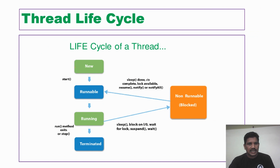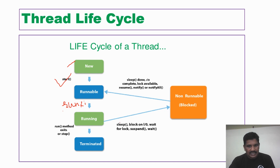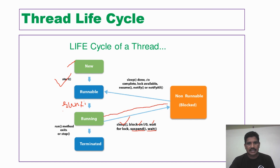I will explain with the help of a diagram. In the new state, once an instance has been created, the threads are in the new state. When threads invoke the start method, the thread switches from new state to runnable state. When the thread scheduler selects it, it moves to running state. When threads invoke the sleep method, require I/O operations, wait for a lock, are suspended, or invoke the wait method, the thread switches from running state to the blocked state.